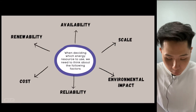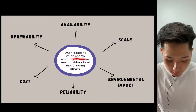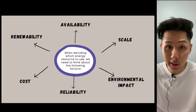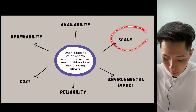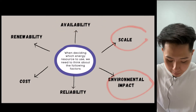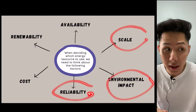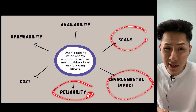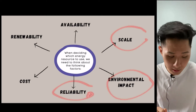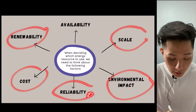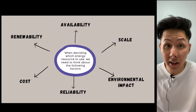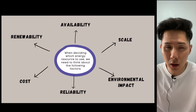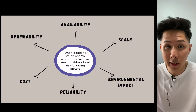When deciding which energy resources to use, we need to consider several factors: whether the resource is available, whether we can scale it, its environmental impact, whether it's reliable — for example, solar energy isn't always reliable — as well as cost and renewability, meaning whether we can use it again and again. Fossil fuels, for instance, cannot be reused once they're gone.